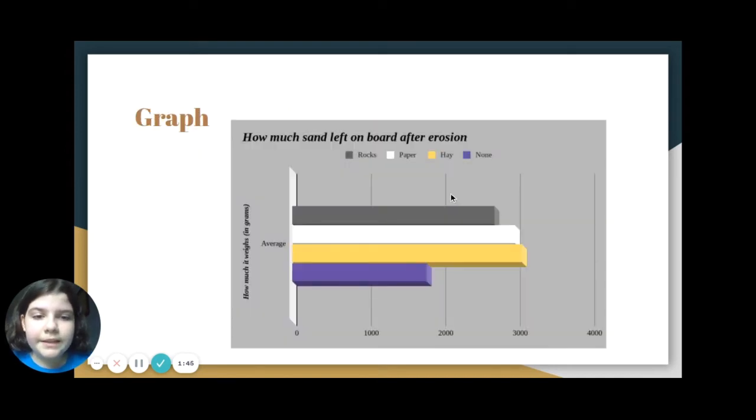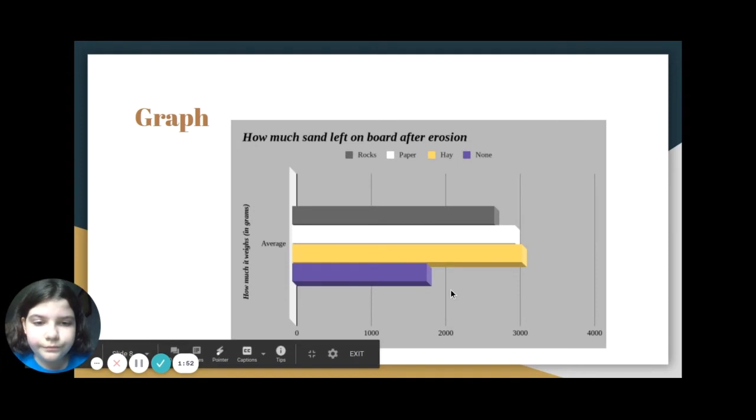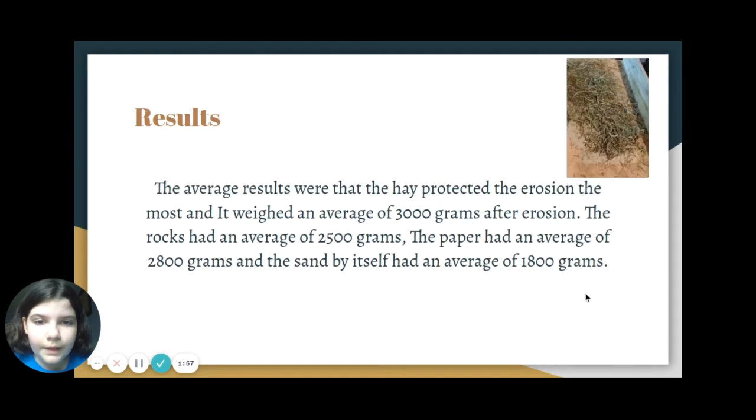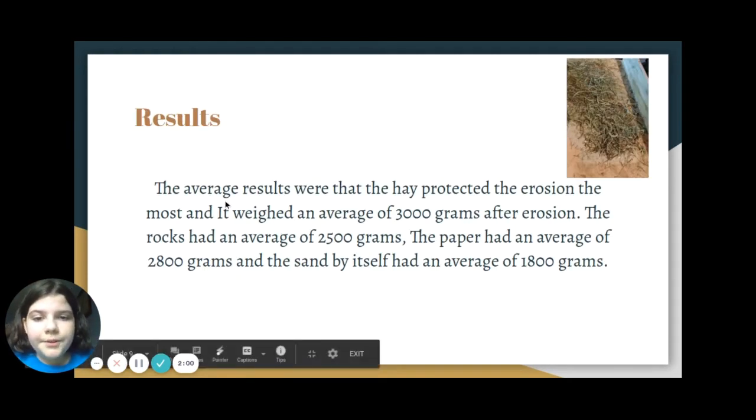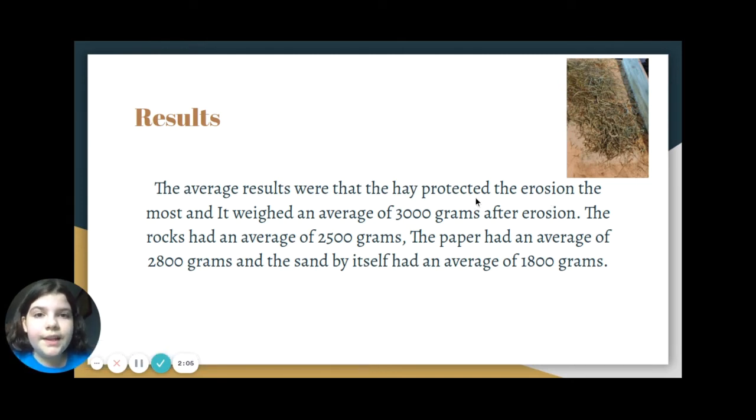This is my graph showing the averages again: rocks, paper, hay, and nothing. The average results were that hay protected the erosion the most, weighing an average of 3,000 grams after erosion. The rocks had an average of 2,500 grams, the paper had an average of about 2,800 grams, and the sand by itself had an average of 1,800 grams.